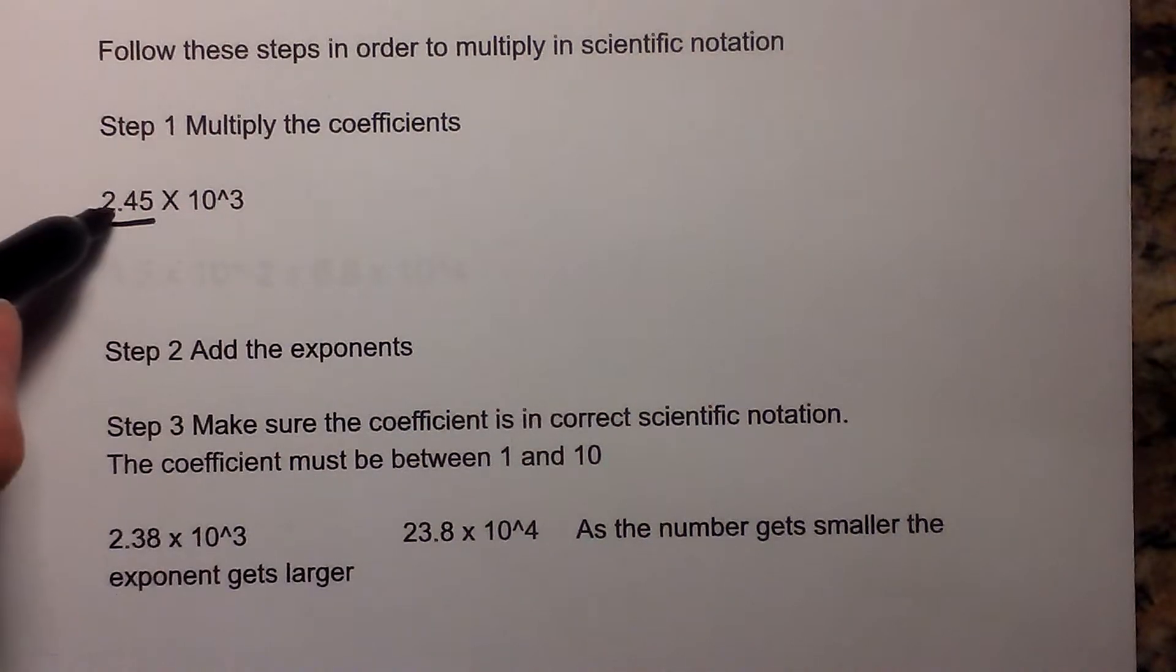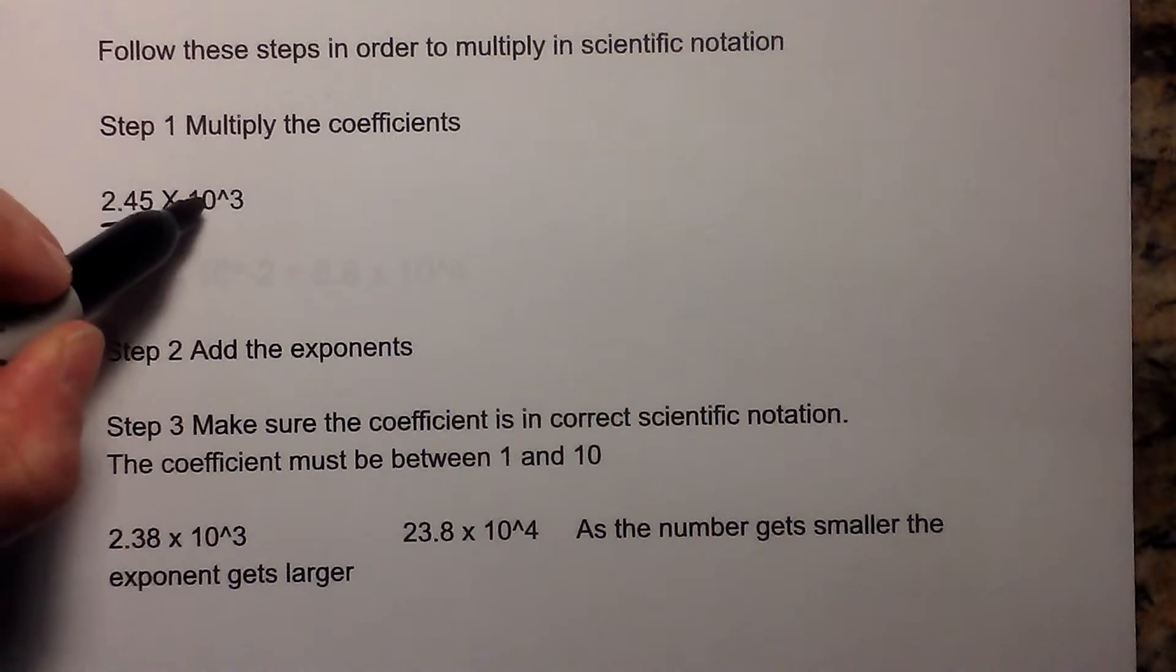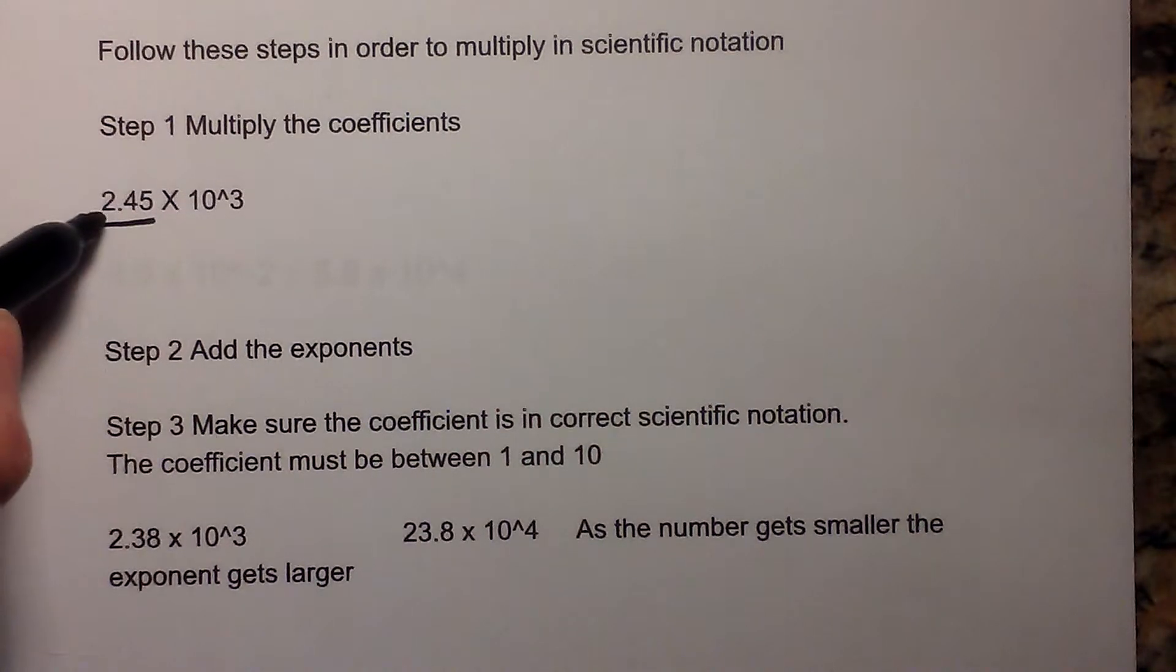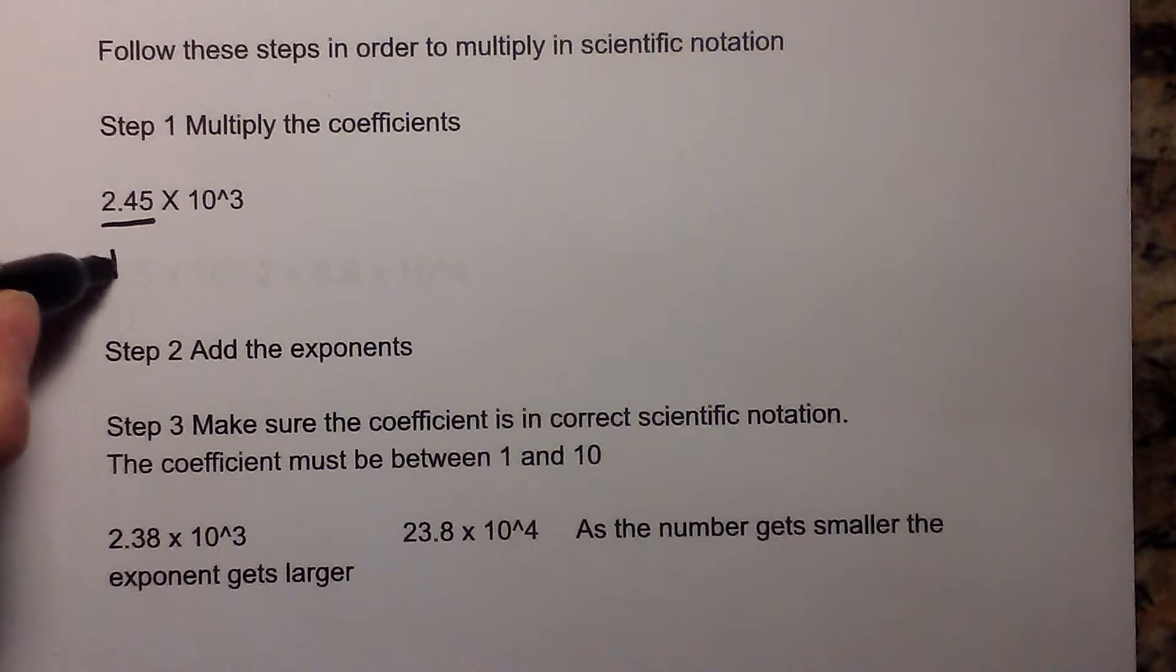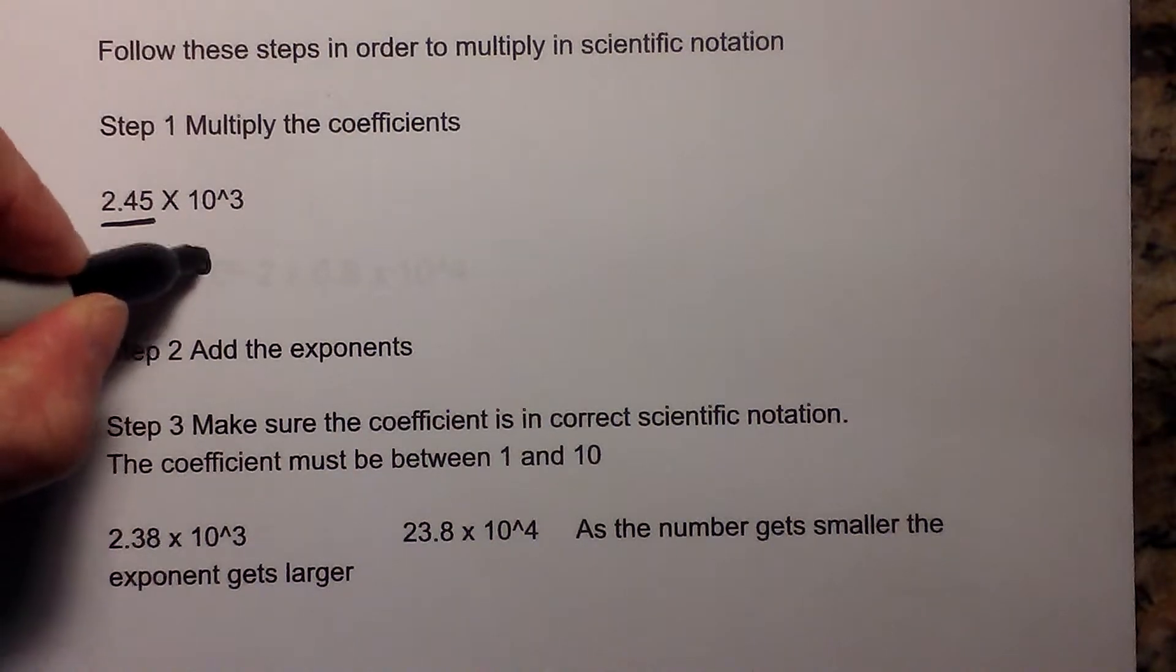Before we begin, if we have this number in scientific notation, 2.45 times 10 to the third power, the 2.45 is the coefficient, and the coefficient must always be between 1 and 10.